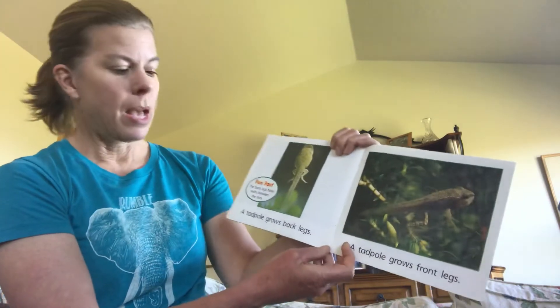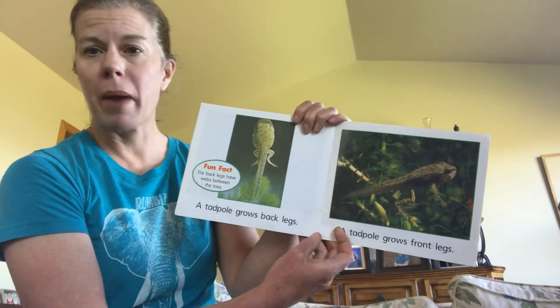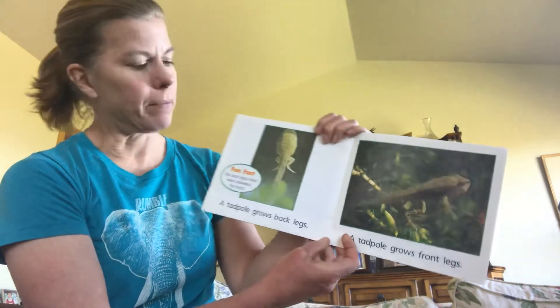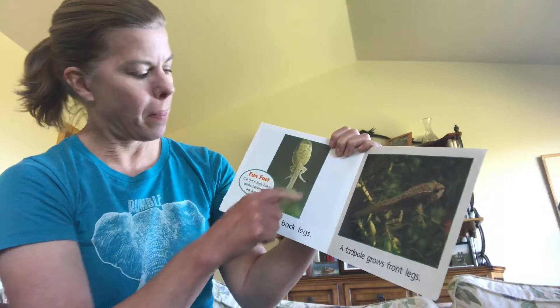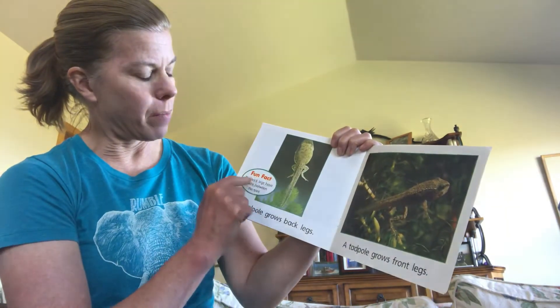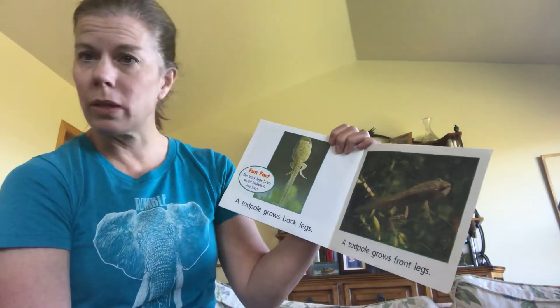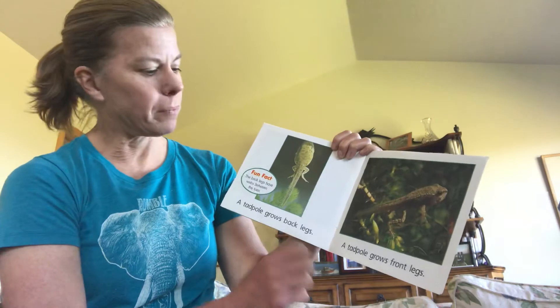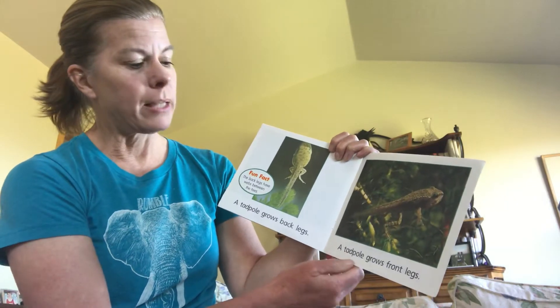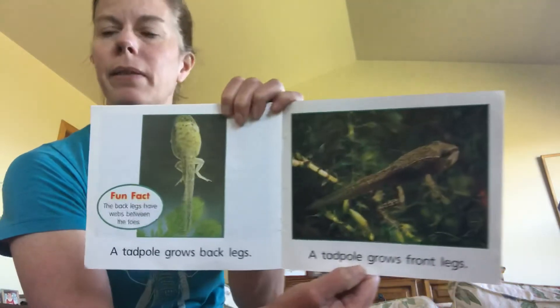A tadpole grows back legs — see them? The back legs have webs between the toes. A tadpole grows front legs.